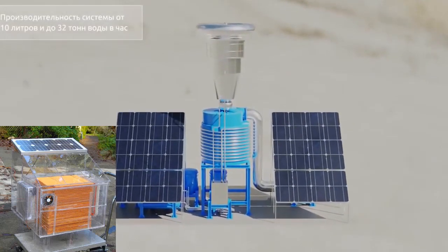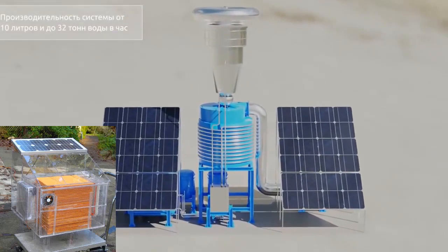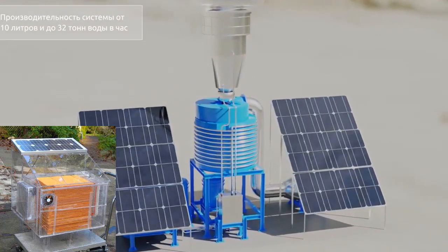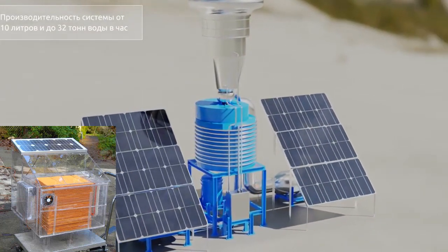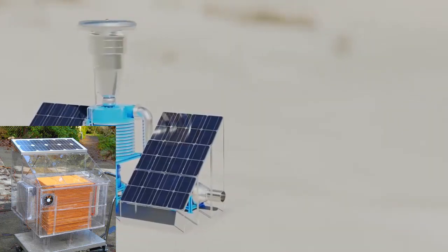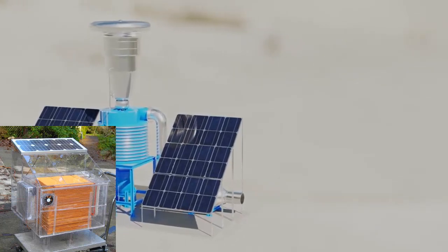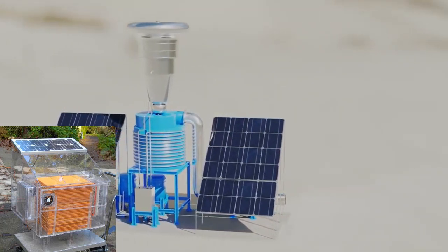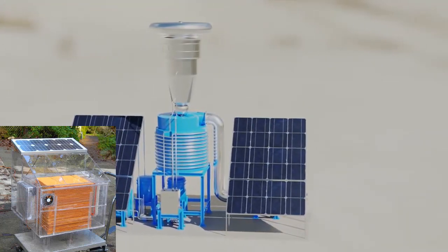To put this into perspective, let's consider the capacity of a typical air conditioner. The smallest air conditioner available has a capacity of 9000 BTU-H, equivalent to approximately 2637 watts. It is important to note that the specialized technology for creating water from the air will typically have a smaller capacity compared to air conditioners.